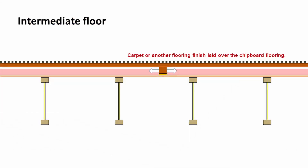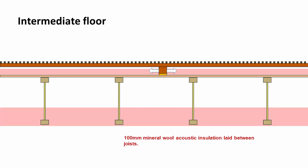We can pretty much lay anything we like on top — carpet or some other flooring finish. In between the joists at the bottom edge, we would have 100mm of mineral wool acoustic insulation. That would be installed as you were building up the floor construction.